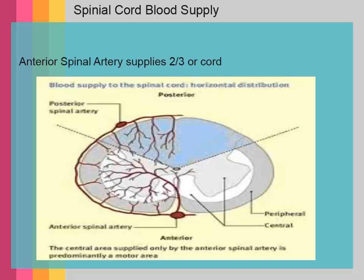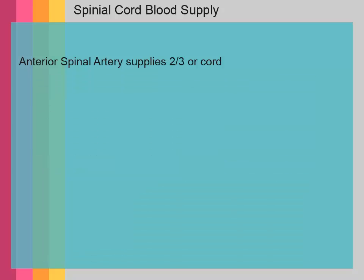In regards to vascular supply to the spinal cord, the anterior two-thirds of the cord are supplied by the anterior spinal artery, whereas the posterior spinal artery only covers about one-third of the spinal cord.